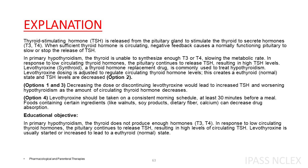Option 4. Levothyroxine should be taken on a consistent morning schedule, at least 30 minutes before a meal. Foods containing certain ingredients, like walnuts, soy products, dietary fiber, and calcium, can decrease drug absorption. Educational objective: In primary hypothyroidism, the thyroid does not produce enough hormones, T3 and T4. In response to low circulating thyroid hormones, the pituitary continues to release TSH, resulting in high levels. Levothyroxine is usually started or increased to lead to a euthyroid, normal, state.